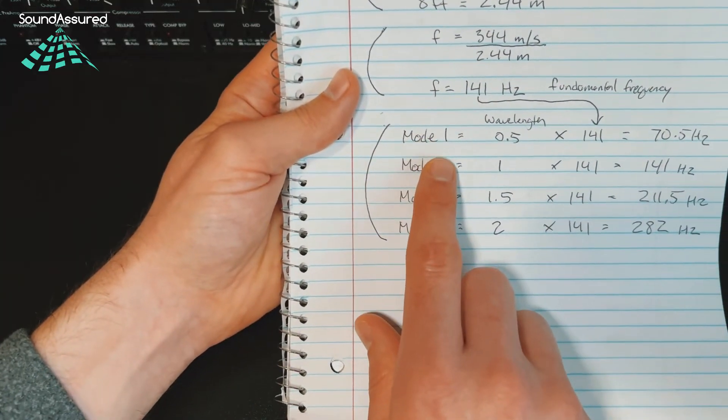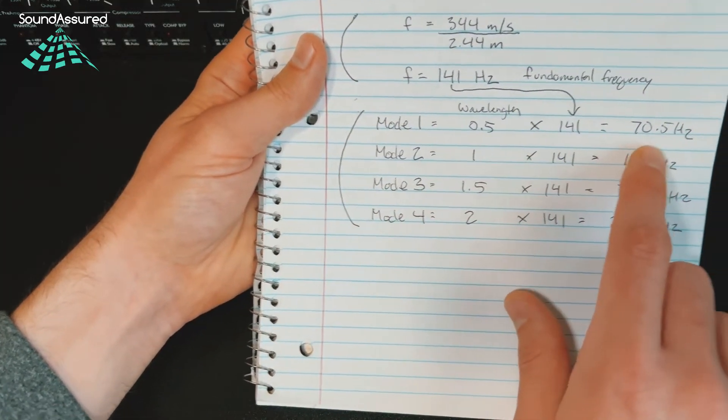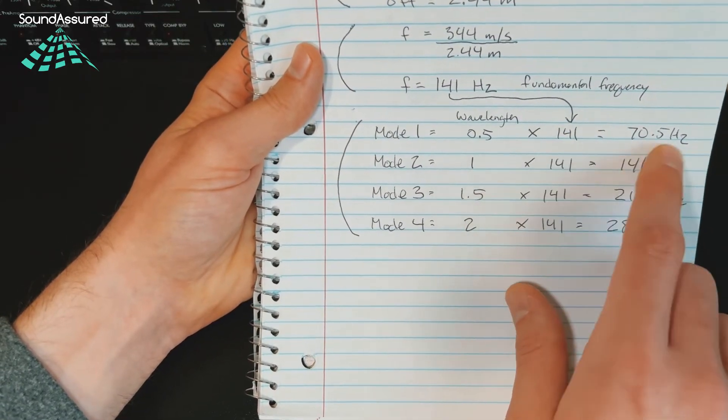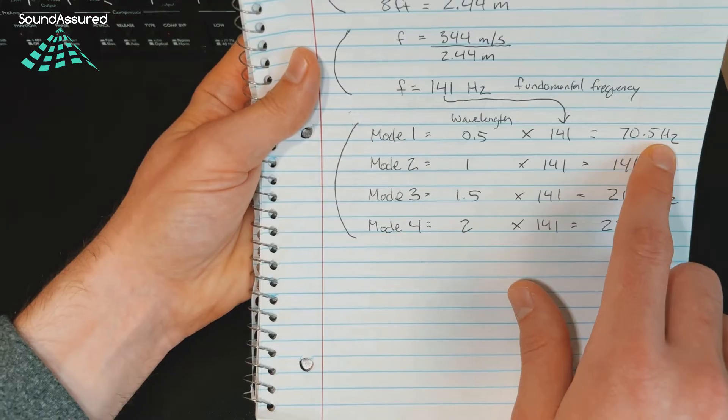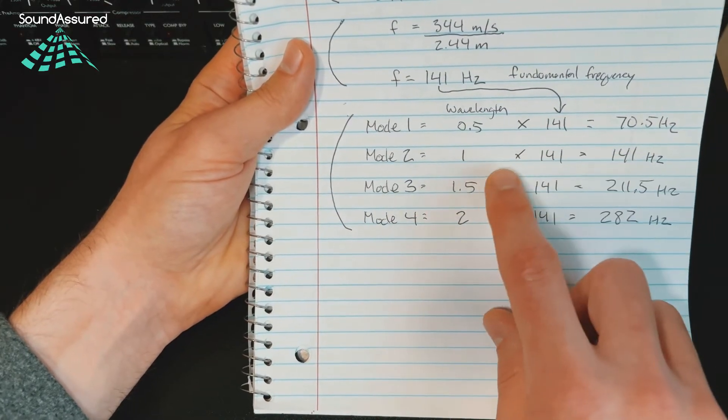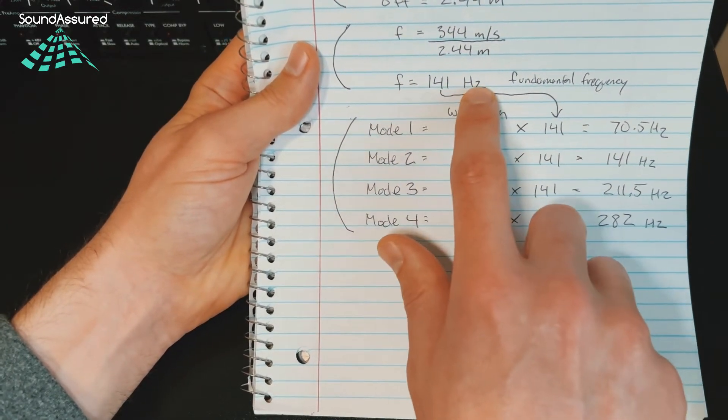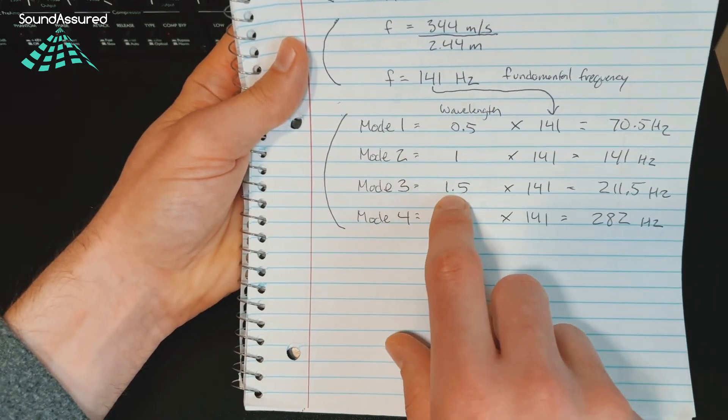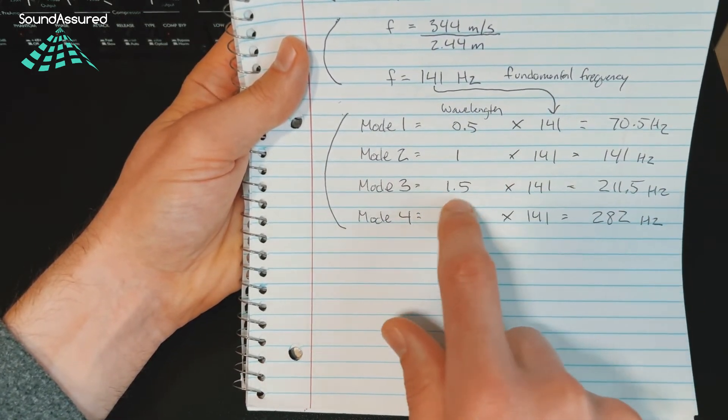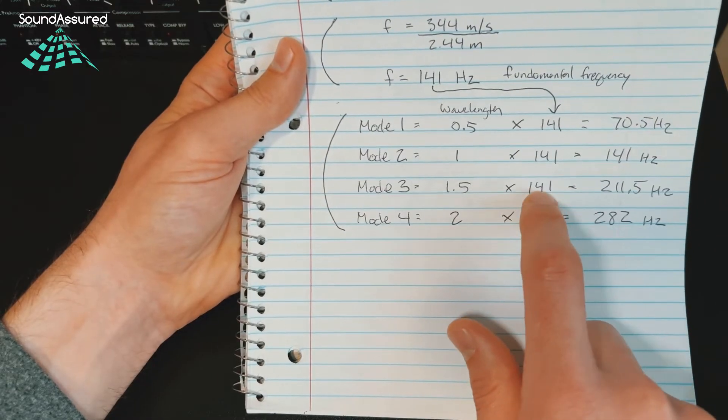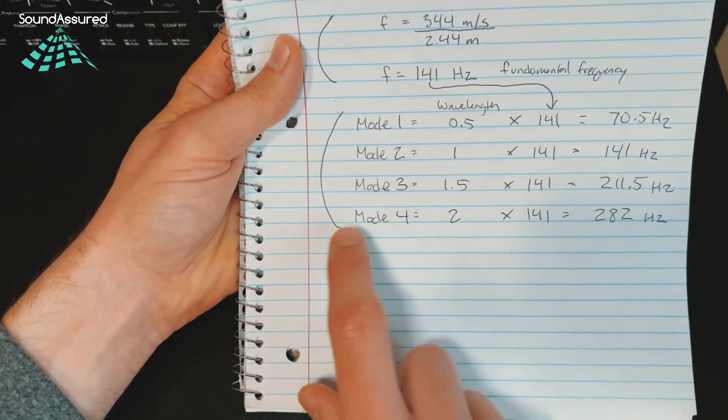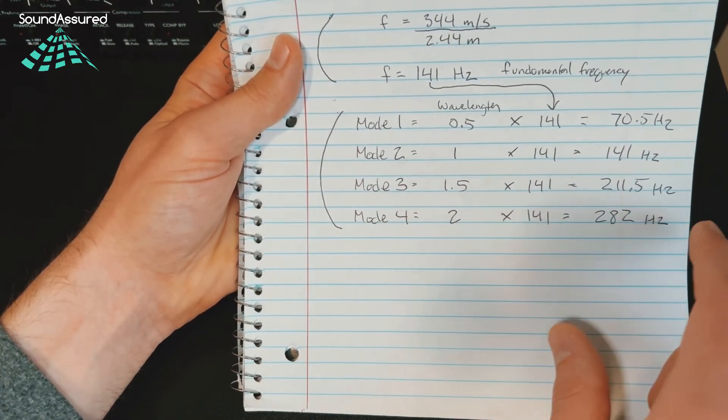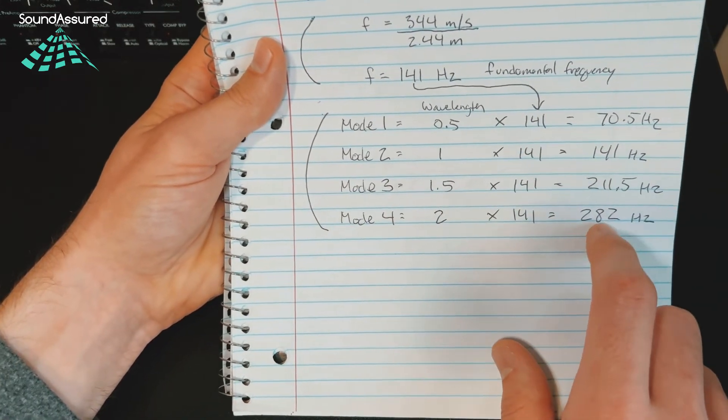So now we can find our modes down here. You basically divide that by two to get 70.5 Hertz for the first mode. Second mode is the fundamental frequency, so 141 Hertz. Third mode is 1.5 wavelengths times 141, so 211. Then the fourth mode is 2 times the fundamental frequency, which is 282 Hertz.